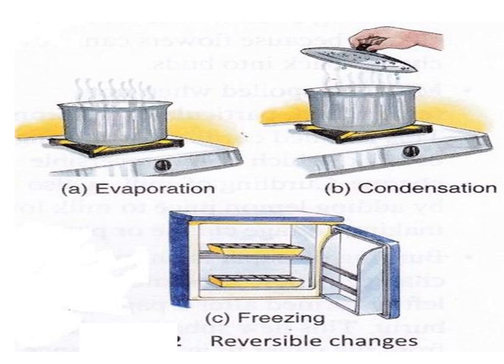Evaporation is the process of a substance in a liquid state changing to a gaseous state due to an increase in temperature and pressure. It is the process by which a liquid state converts into a gaseous state, and it is the main fundamental part of the water cycle that is constantly occurring throughout nature. This is why it is a reversible process.